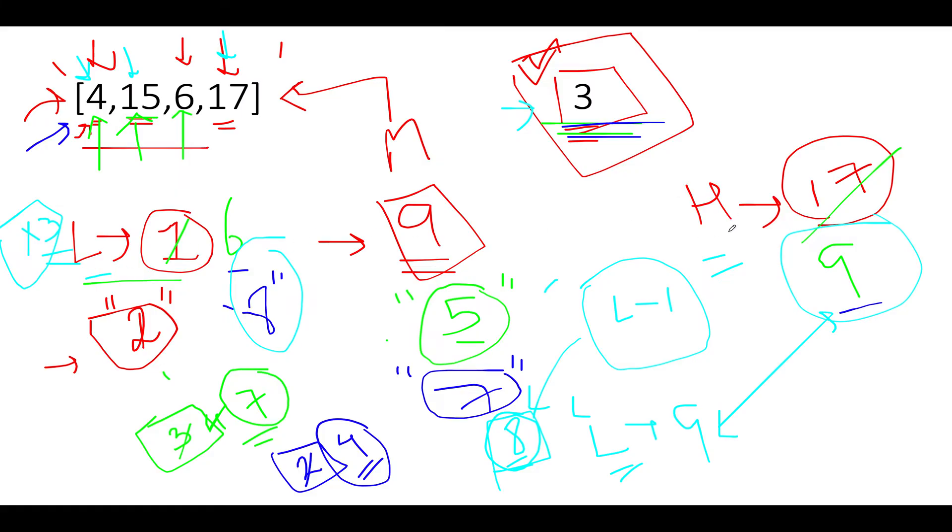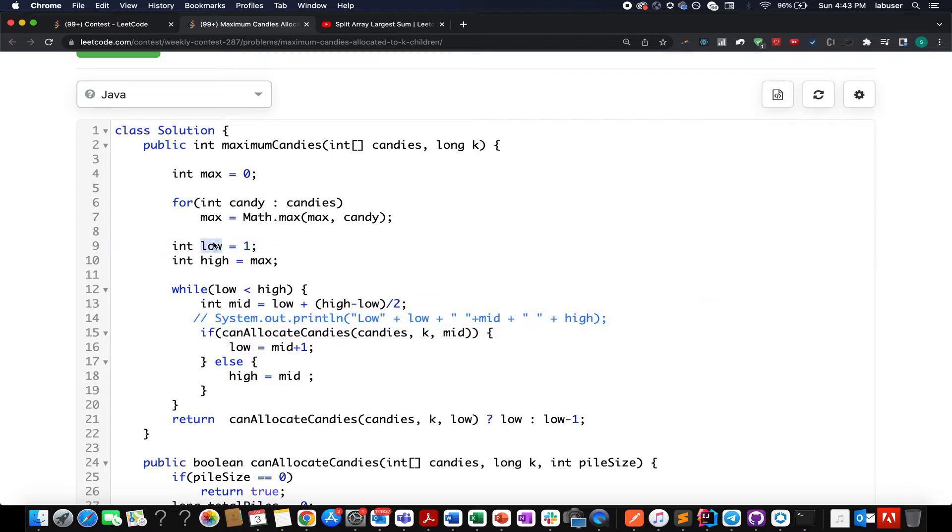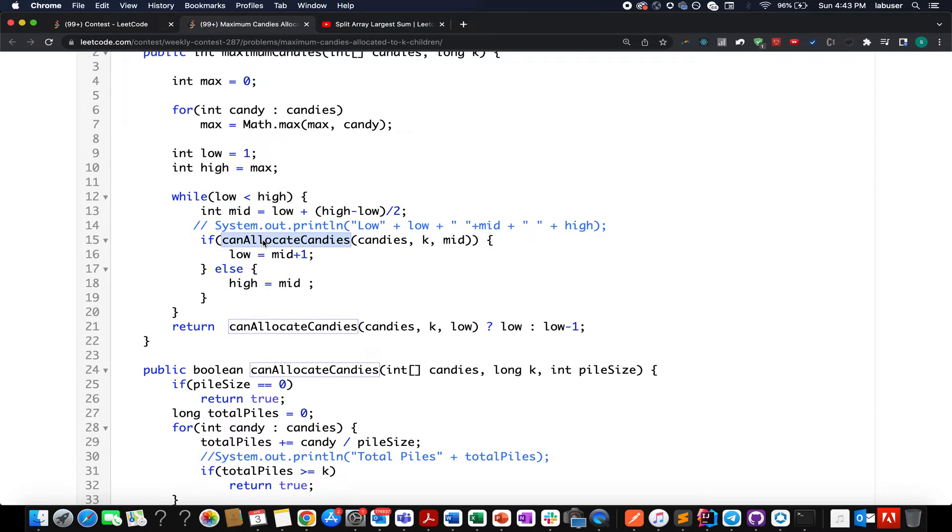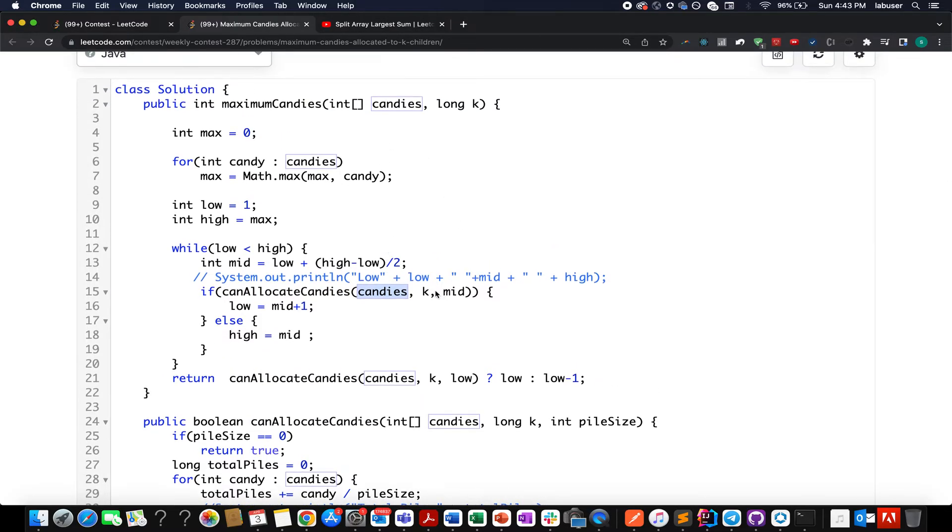Let's walk through the coding section. I'll exactly follow the same steps I talked about. I created two variables, low and high. I iterated through the entire array to identify the maximum candy element present in the candies array. To start with, let's assume low to be 1, high to be maximum. While my low is less than high, I identify the middle element. I've calculated a helper method canAllocateCandies which accepts three parameters: the candies array, the value of k, and the middle value that we're targeting.